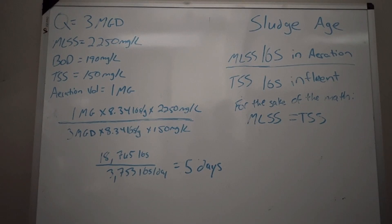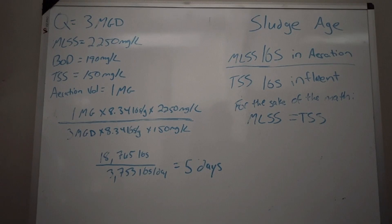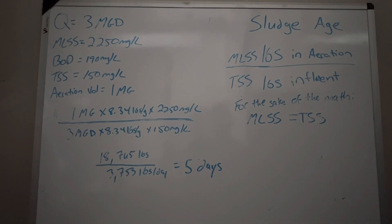This is an important note — I'm going to remind you about this on anything that has to do with pounds going into aeration. If you are given an influent TSS to the plant and you're also given a primary clarifier effluent TSS, you use the primary clarifier effluent TSS, because a treatment process has happened between the plant influent and the primary effluent — it's called the primary clarifier. So you're getting rid of some TSS in the primary clarifier. Use what goes into aeration; do not use the plant influent. Also note that BOD has nothing to do with this equation. You're going to be given things in your math problems that are irrelevant — they're not trying to trick you, they're testing you. Do you know what you're talking about? The equation is pounds in aeration divided by the influent TSS pounds coming into aeration.